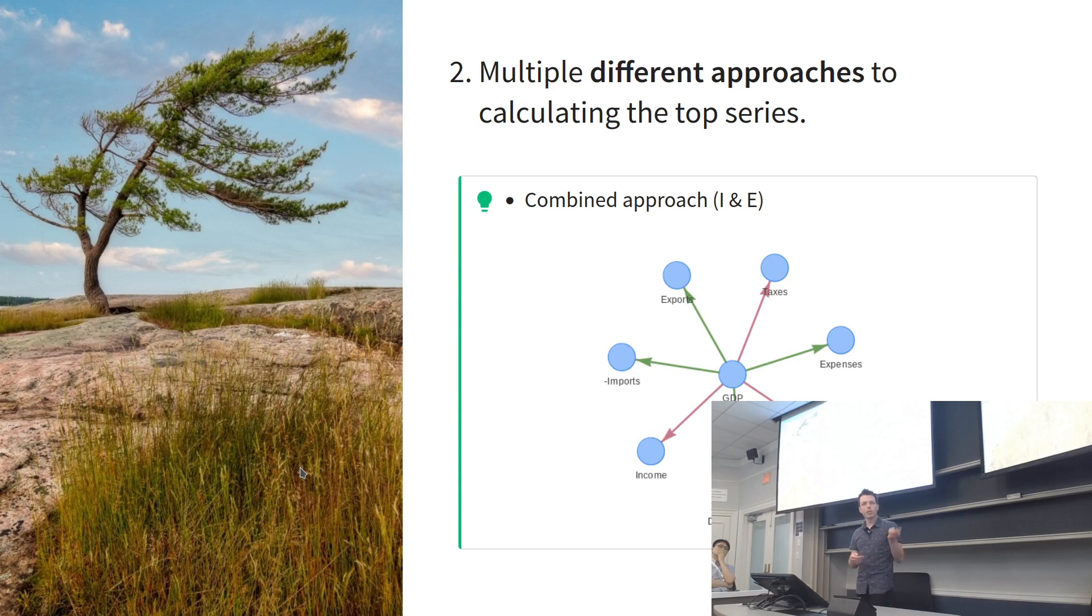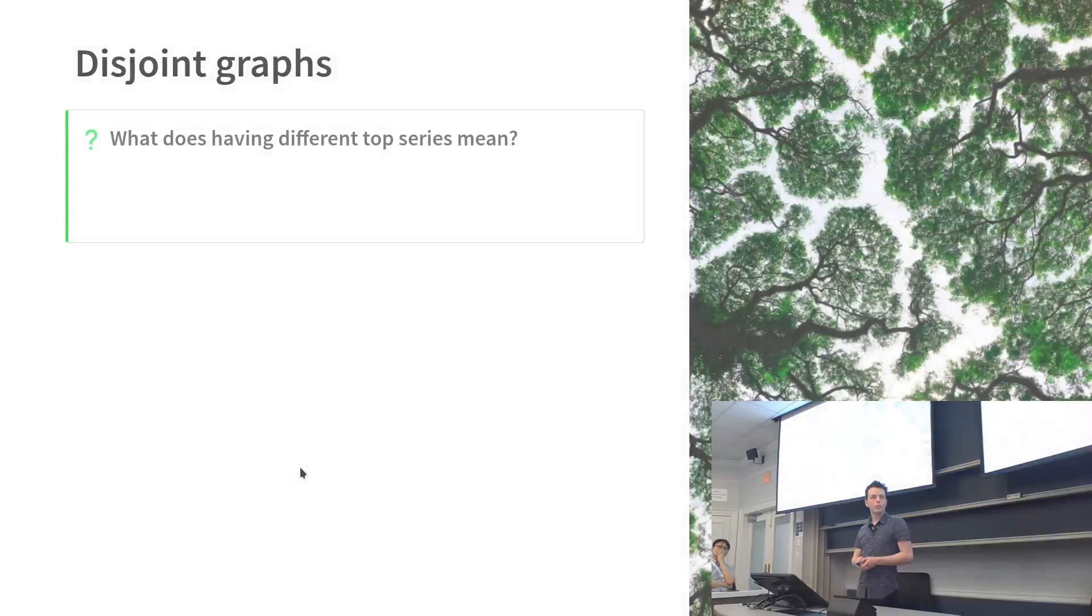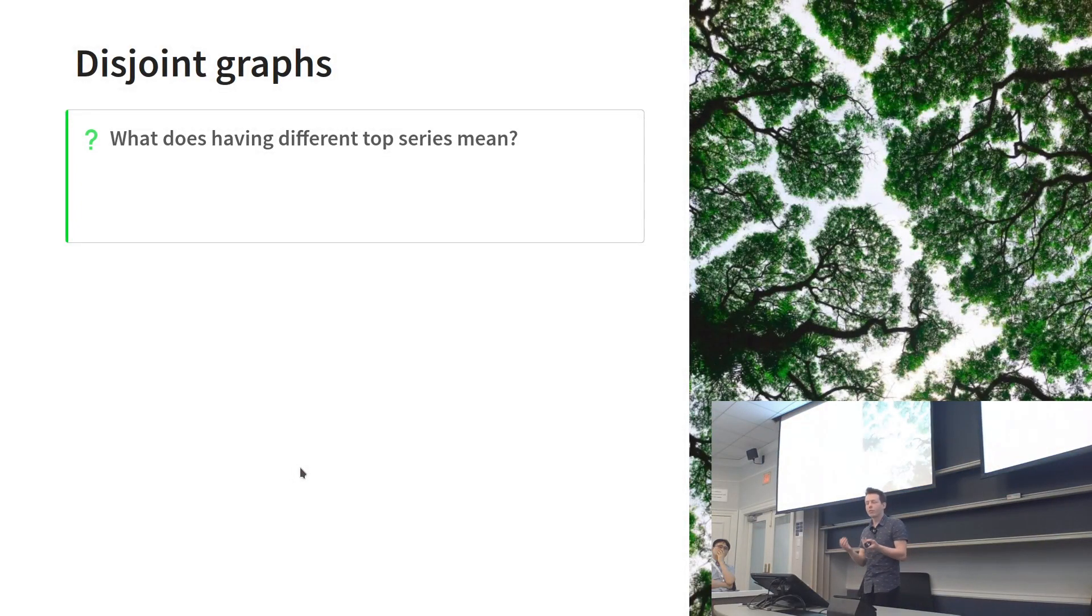Very simply, we can structure this with a combined approach, putting the common GDP as the top level and identifying its subcomponents with colored lines. This is a directed acyclic graph, a lot simpler than the complete one. So yes, it has value to have a different bottom level with the same top level, but what does it mean to have different top levels? We don't often consider aggregation trying to sum up to a different thing, but this also has value. I like to think of this as a disjoint graph, although there are some structures that aren't completely disjoint.